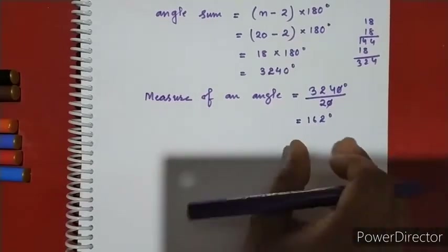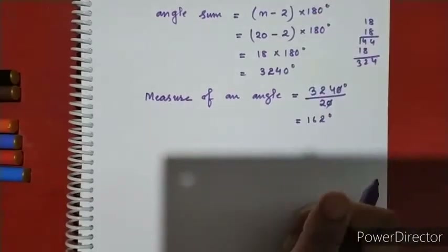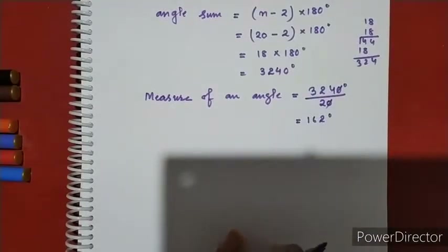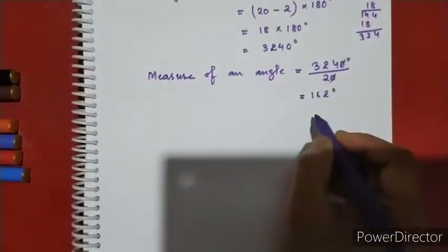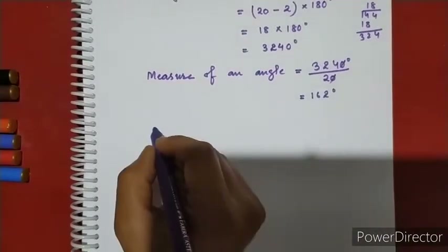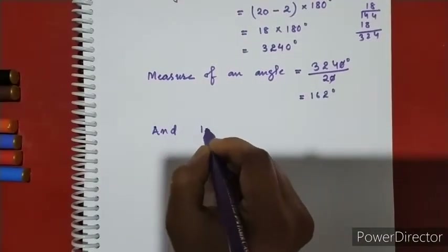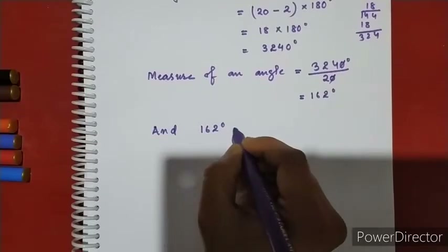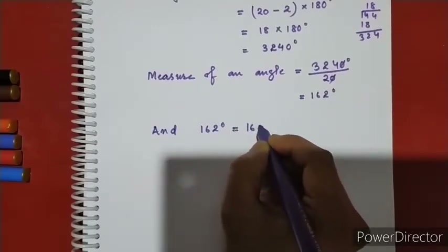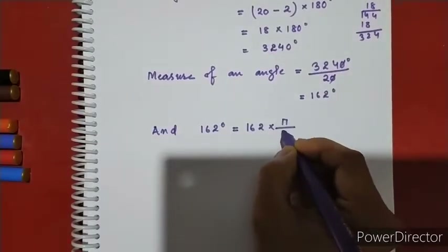That gives us the magnitude. Each internal angle is 162 degrees. To convert to radians: 162 into pi by 180.